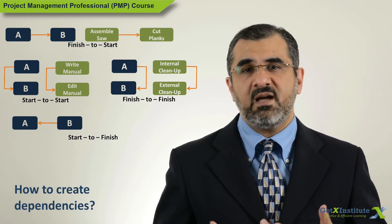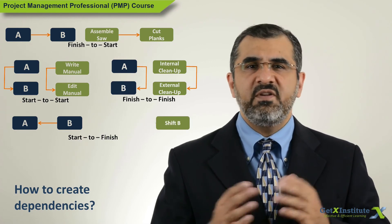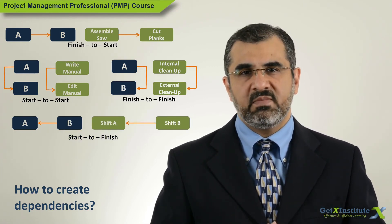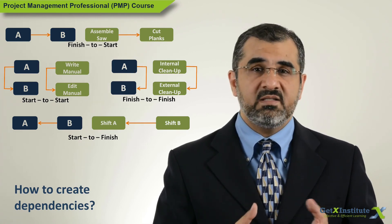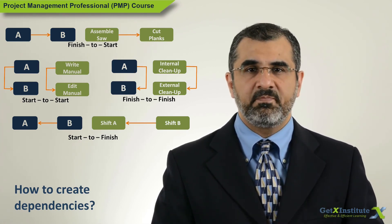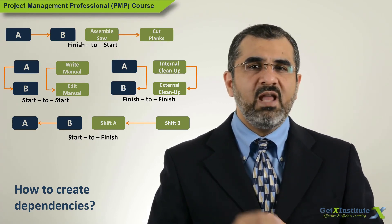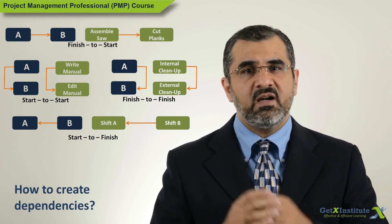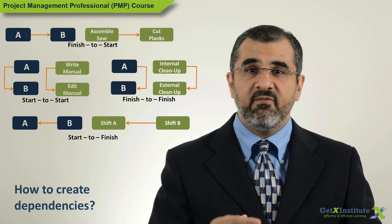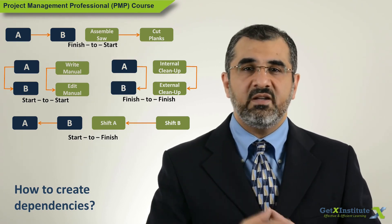Here is an example to explain this relationship. A security guard finishes shift A at 5 PM and the other security guard starts shift B at the same time, at 5 PM. There cannot be a gap between the two. If the second security guard is late and did not arrive on time, shift A will continue and will only finish when shift B has started.